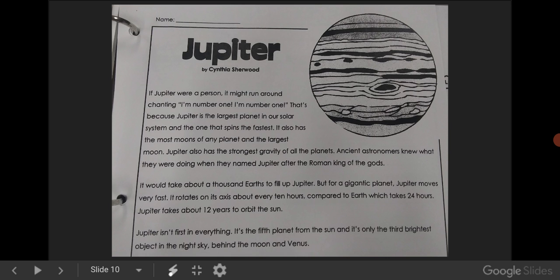It would take about a thousand Earths to fill up Jupiter. But for a gigantic planet, Jupiter moves very fast. It rotates on its axis about every 10 hours, compared to Earth, which takes 24 hours. Jupiter takes about 12 years to orbit the Sun.